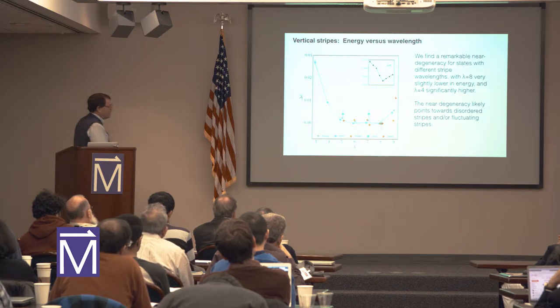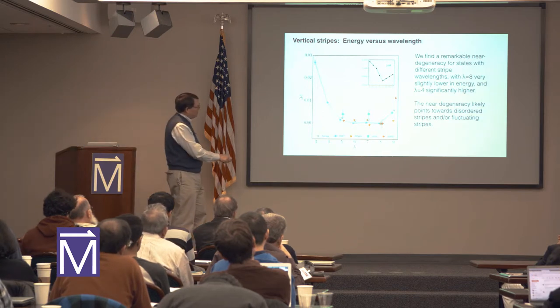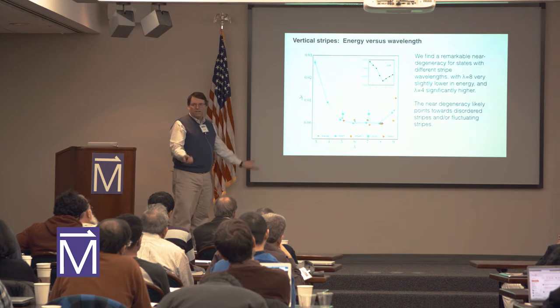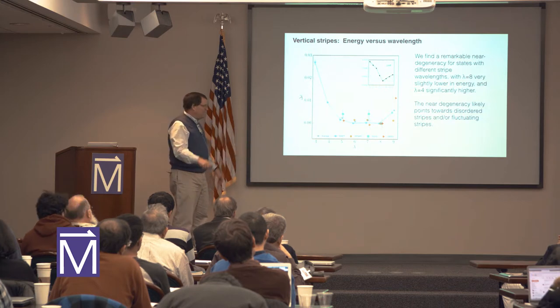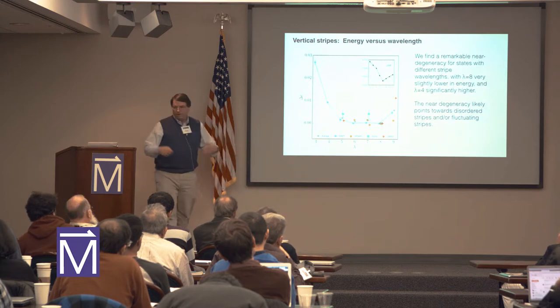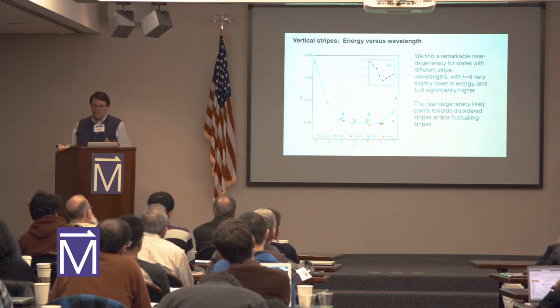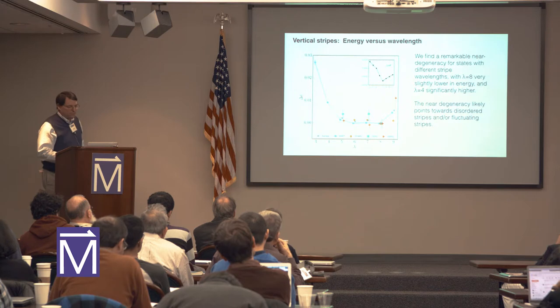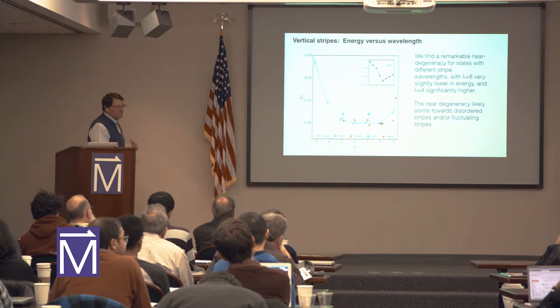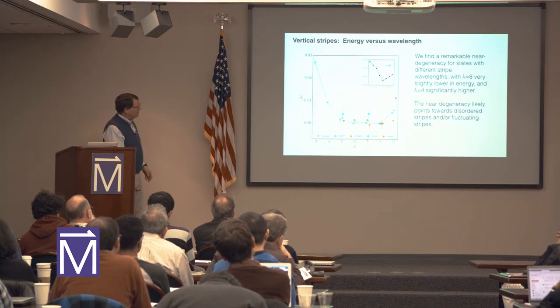This near-degeneracy, if you want to think about what it means for a realistic system, suggests that disordered stripes or fluctuating stripes are much more likely than you might think.